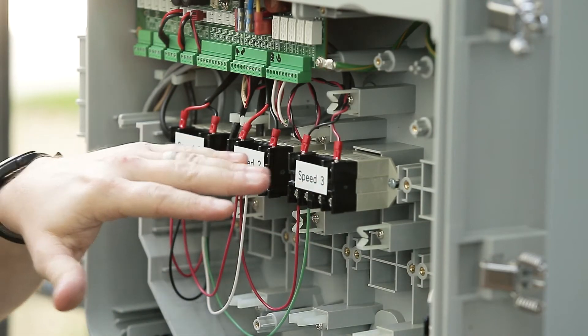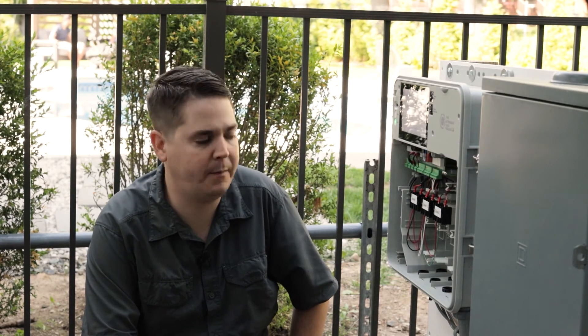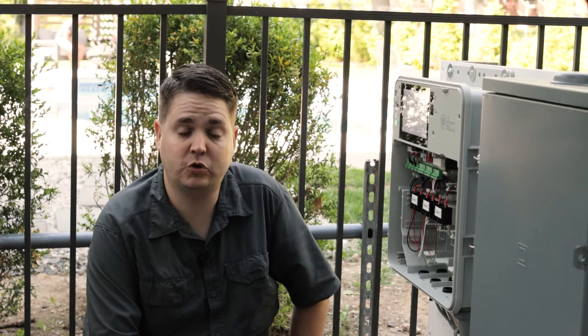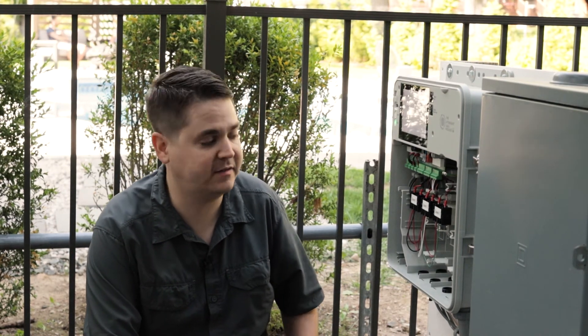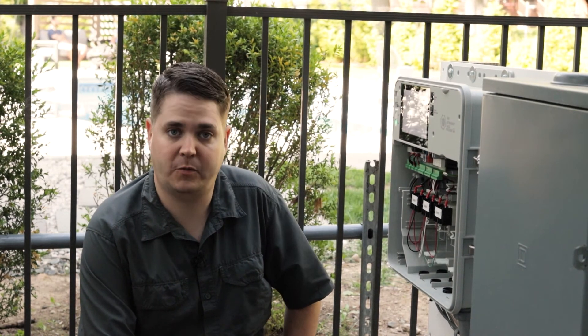You can label them low speed and medium speed or however you want to set it up. And then you can set a schedule for those auxiliary relays to activate those speeds from your automation panel.